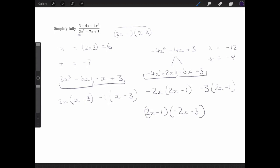So I've got that now and that I can put into this. So I have 2x minus 1 and I have negative 2x minus 3.